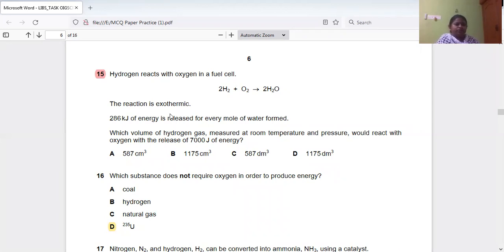So what we have to do - we've learned how to find the volume, right? What is the formula to find the volume? Volume equals moles times volume of gas. Volume of any gas at RTP is 24.